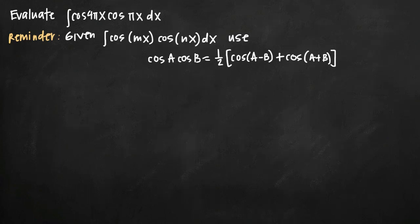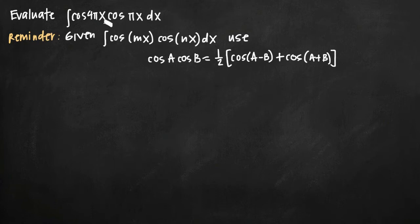Today we're going to be talking about how to evaluate an integral of the form cosine of mx times cosine of nx, where m and n are constant coefficients on these x values. In this particular problem, we've been given the integral of cosine of 4πx times cosine of πx dx and asked to evaluate it.